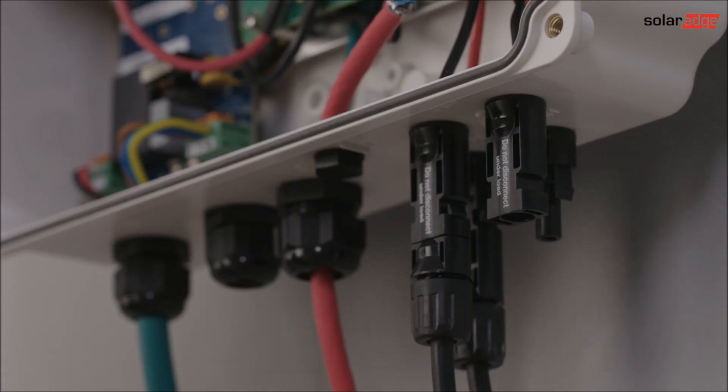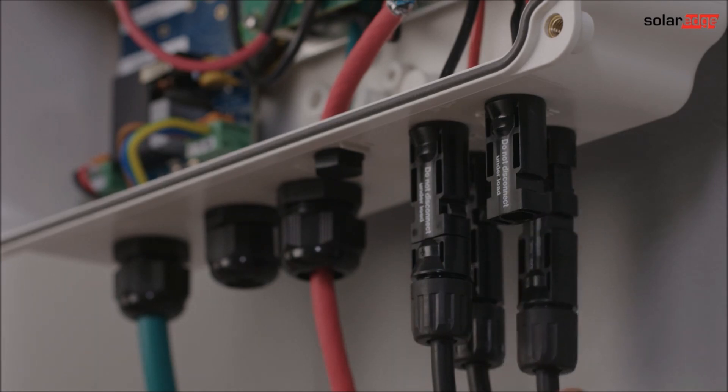To connect the DC wires to the storage interface, crimp MC4 connectors to the end of the wires. Make sure to crimp with the correct polarity.